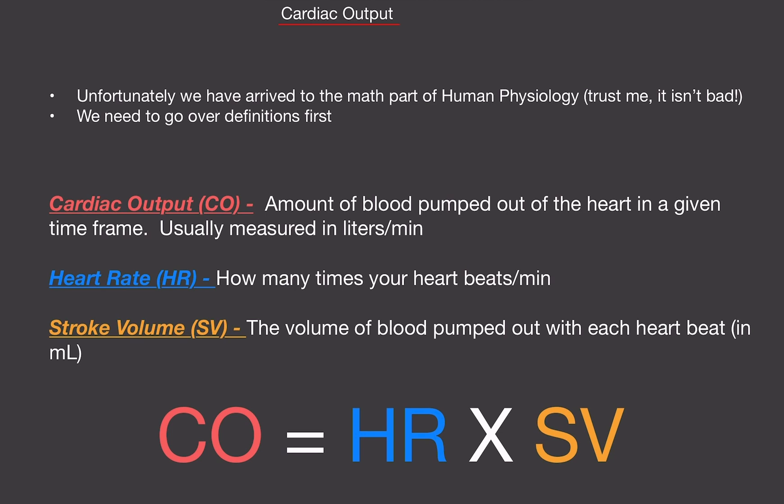How do we actually calculate cardiac output? Well, we use this huge equation down here. It goes as follows: cardiac output equals the heart rate times stroke volume. That's it.